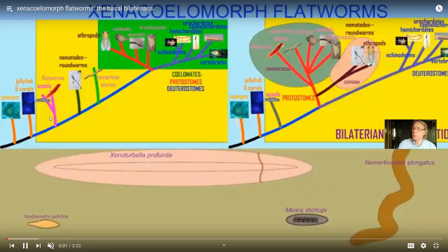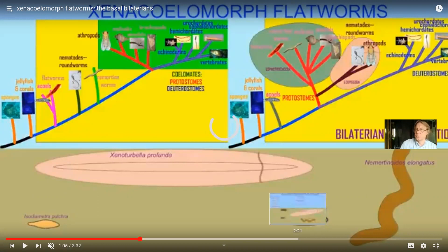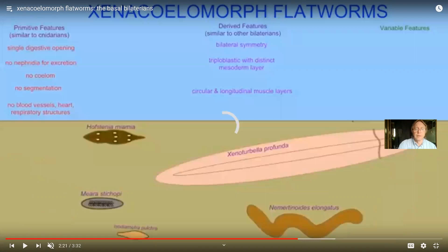There are still some flatworms — not very well known and not the most common — which are the most primitive bilaterians, in between jellyfish and all other bilaterally symmetrical animals. This is still a primitive group, but the other flatworms — things like planaria, tapeworms, and flukes — have been moved and are now put together with mollusks and annelids. This video will go through some of their primitive features, derived features, and features which vary.